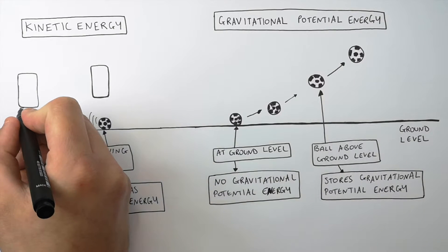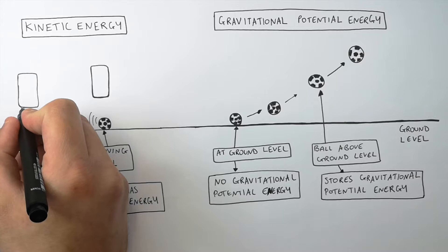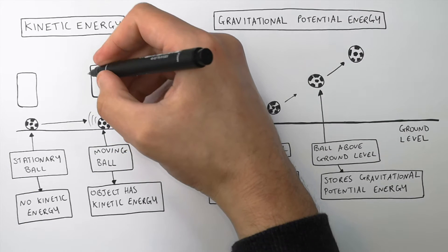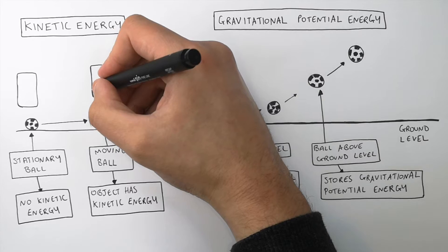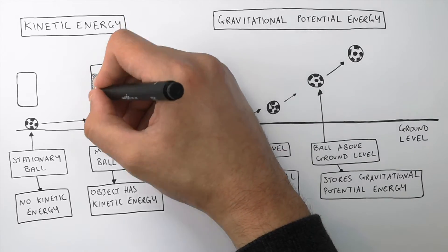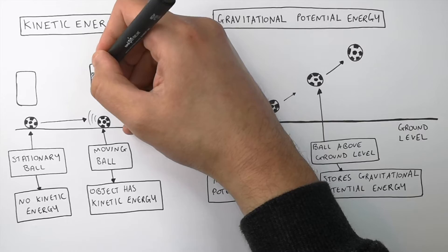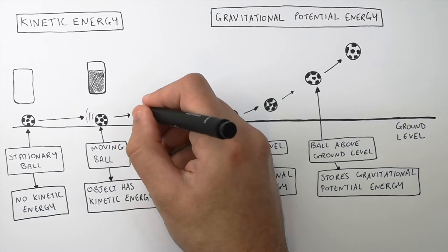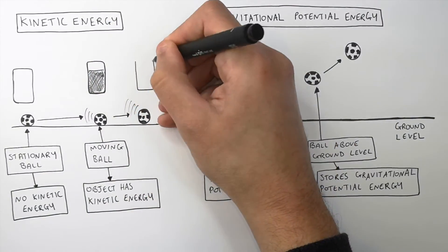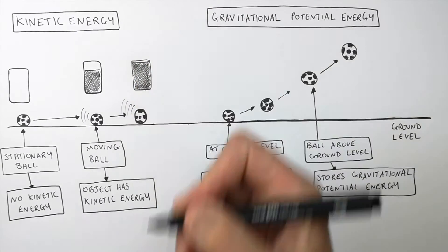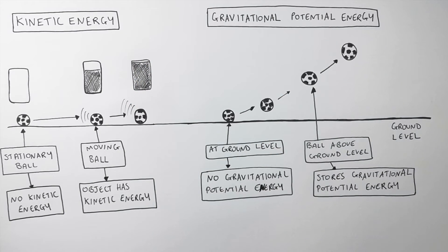When the ball is stationary, there is no energy in its kinetic energy store. However, when the ball is moving, the object's energy in its kinetic energy store is going to increase. And the faster the ball is moving, the more energy it has in its kinetic energy store.